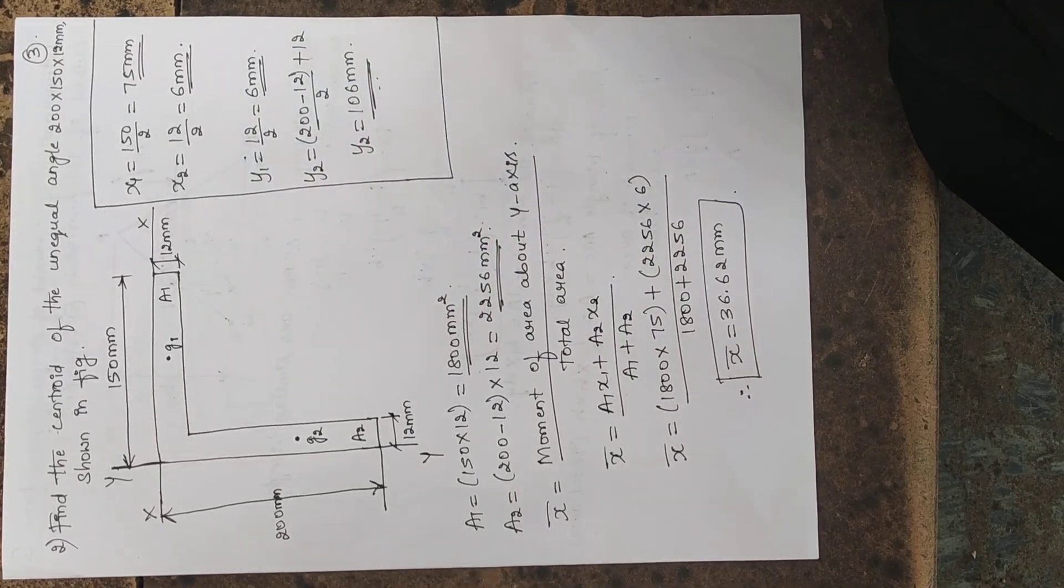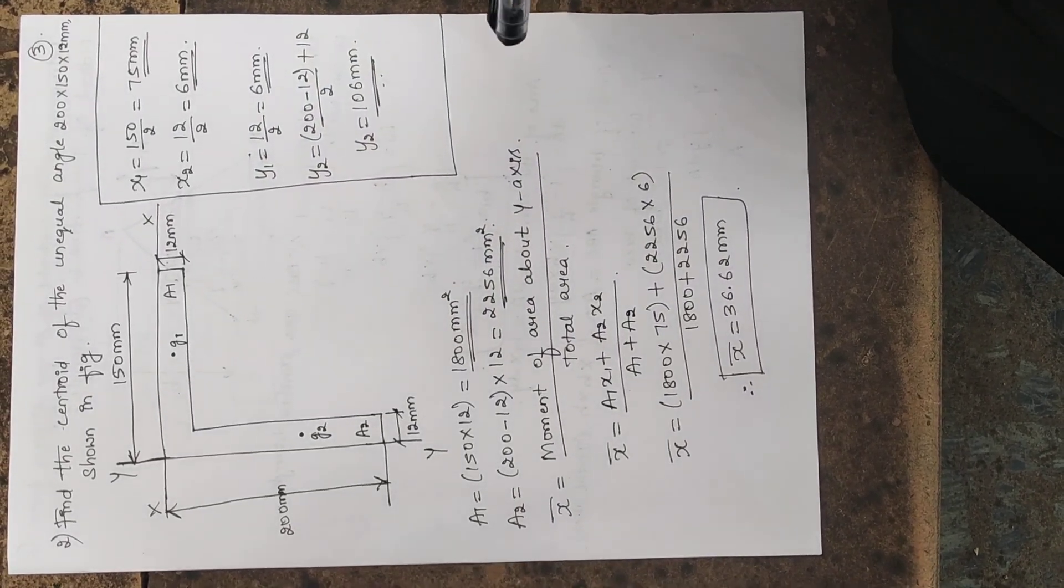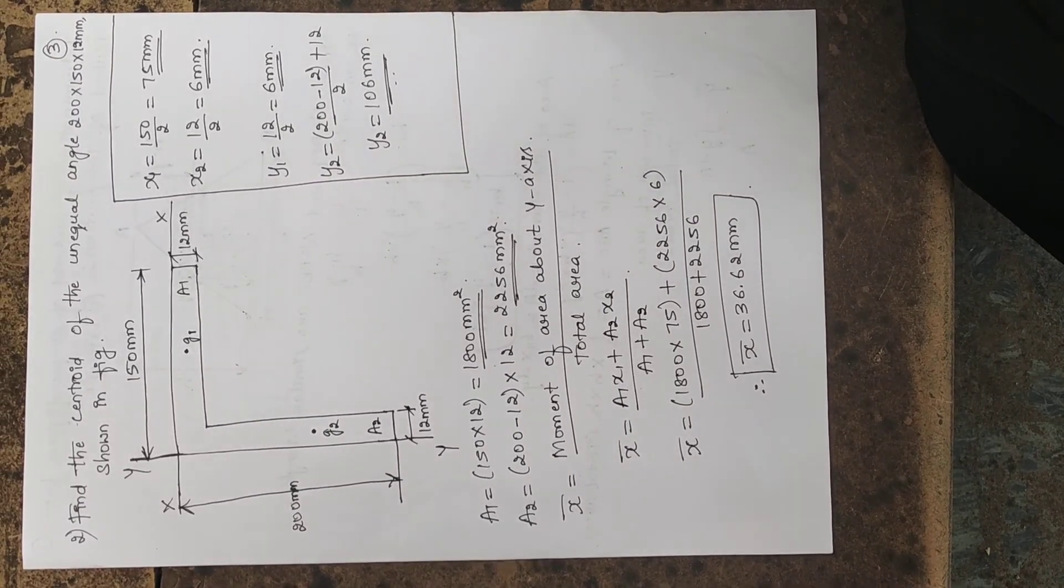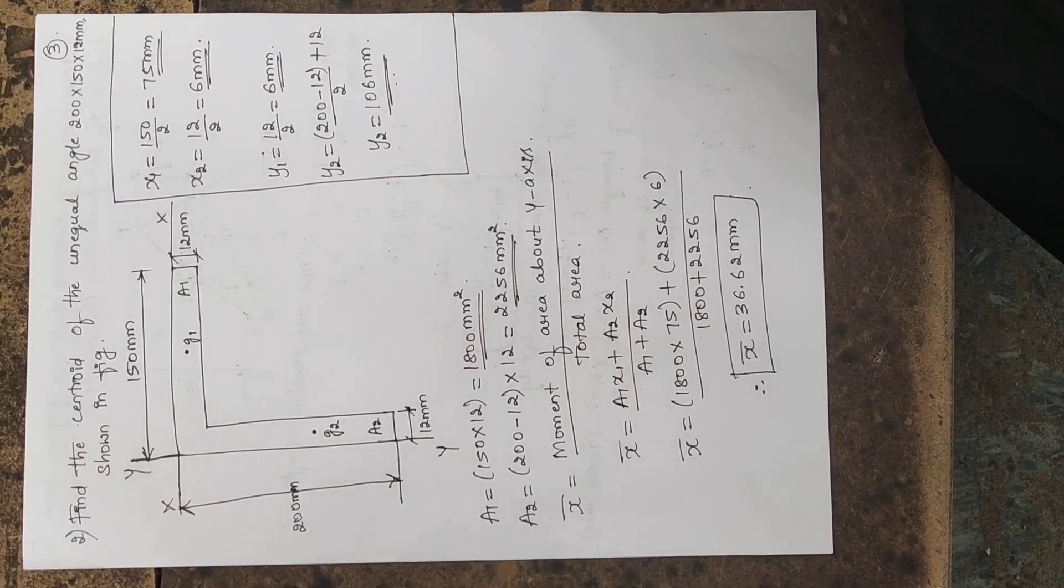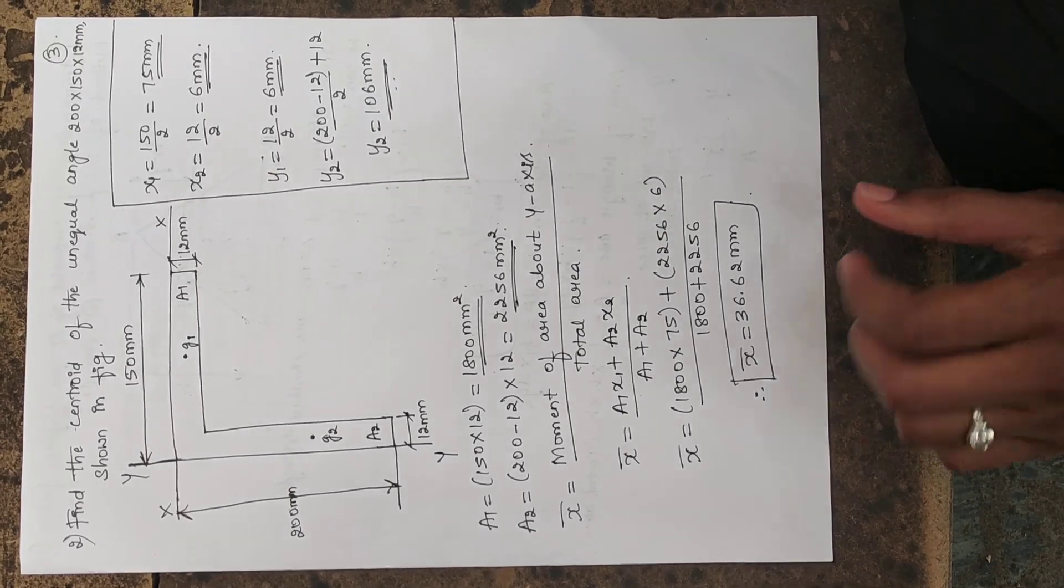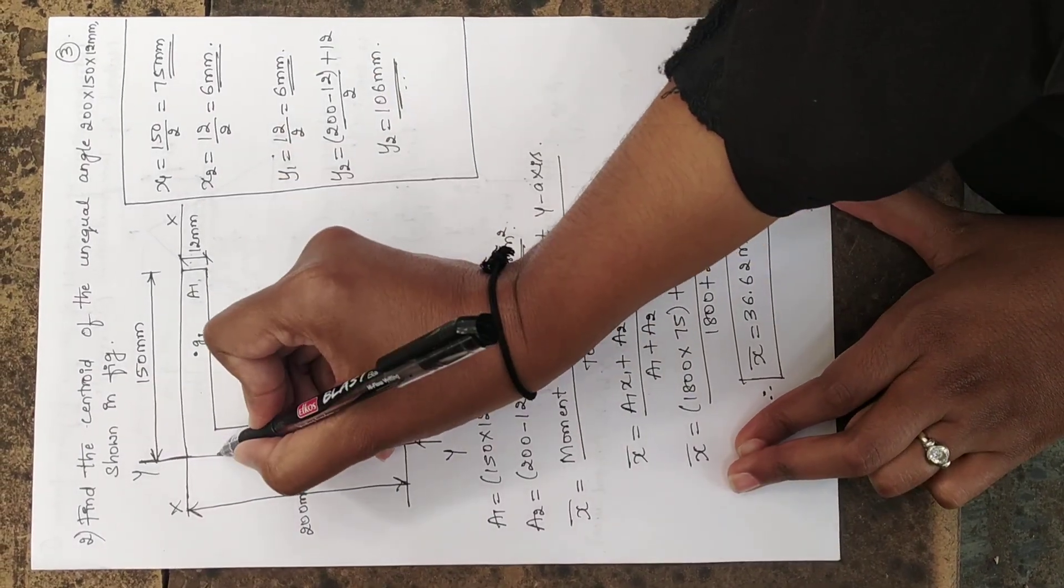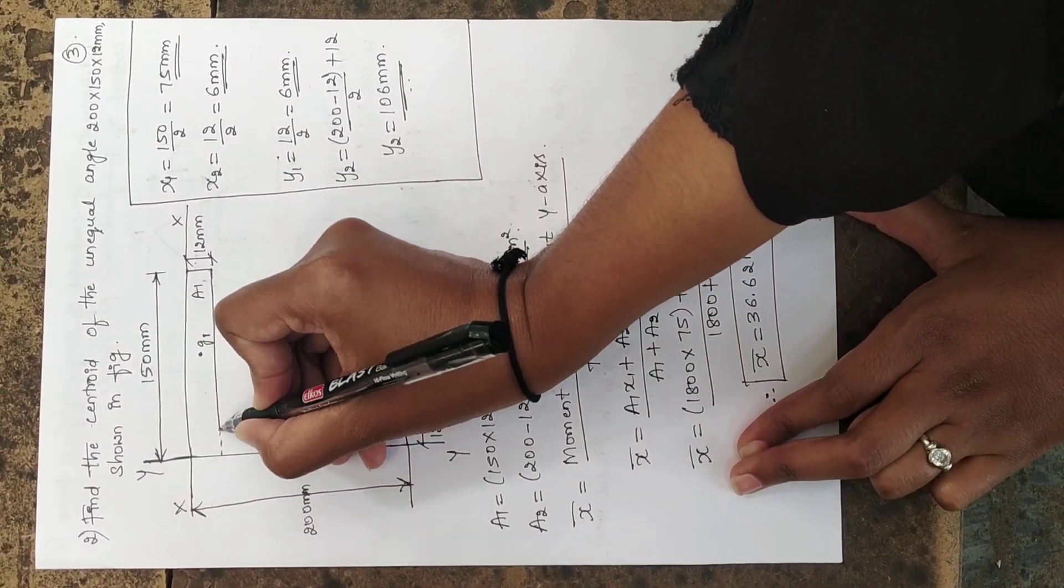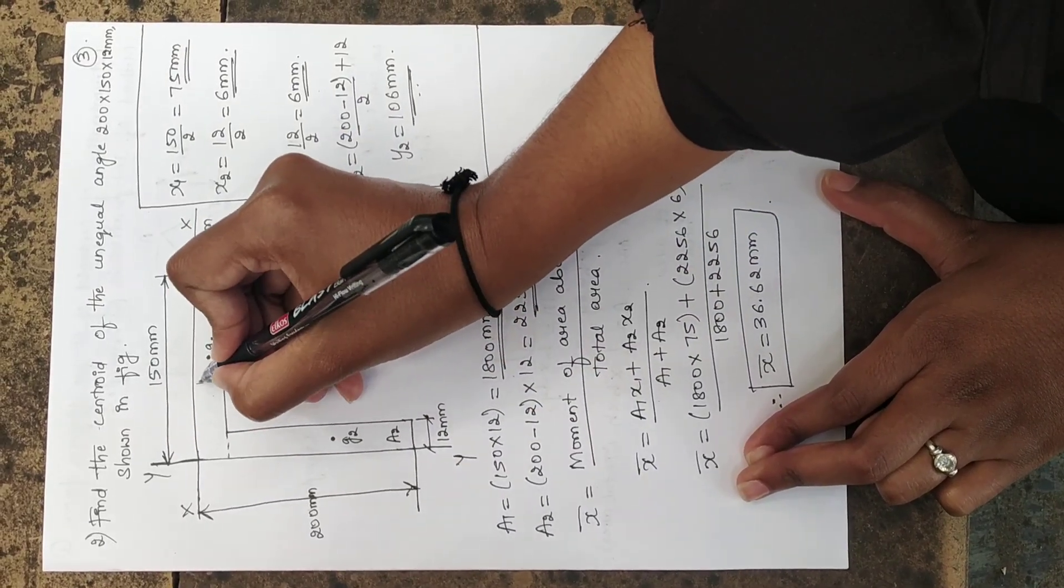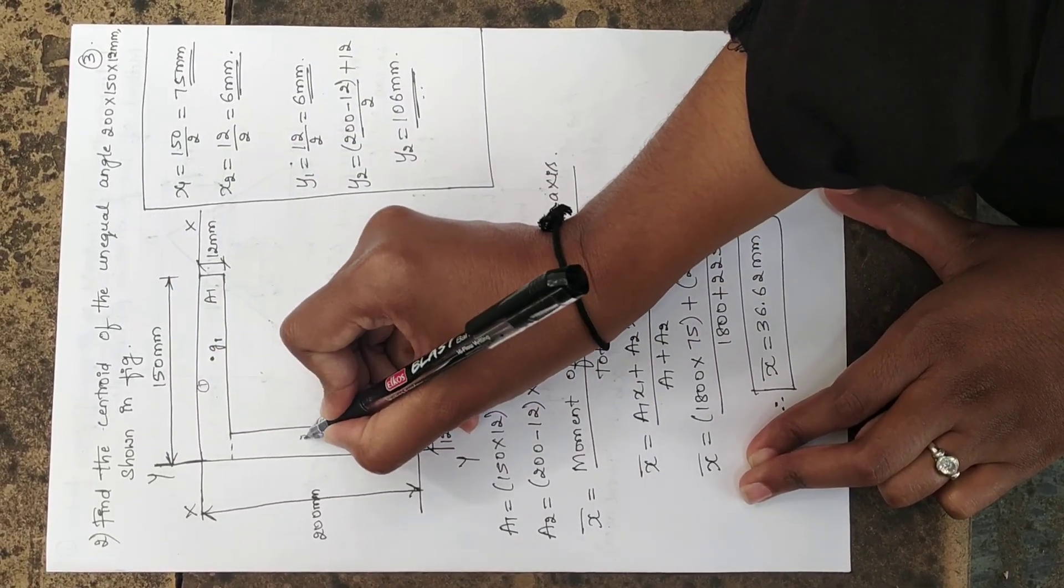Now, let us start finding the area of the section first. To find the area, we have to divide this unequal angle into two parts. I will tell you how to divide. See, you just draw a dotted line here and name this portion as 1.